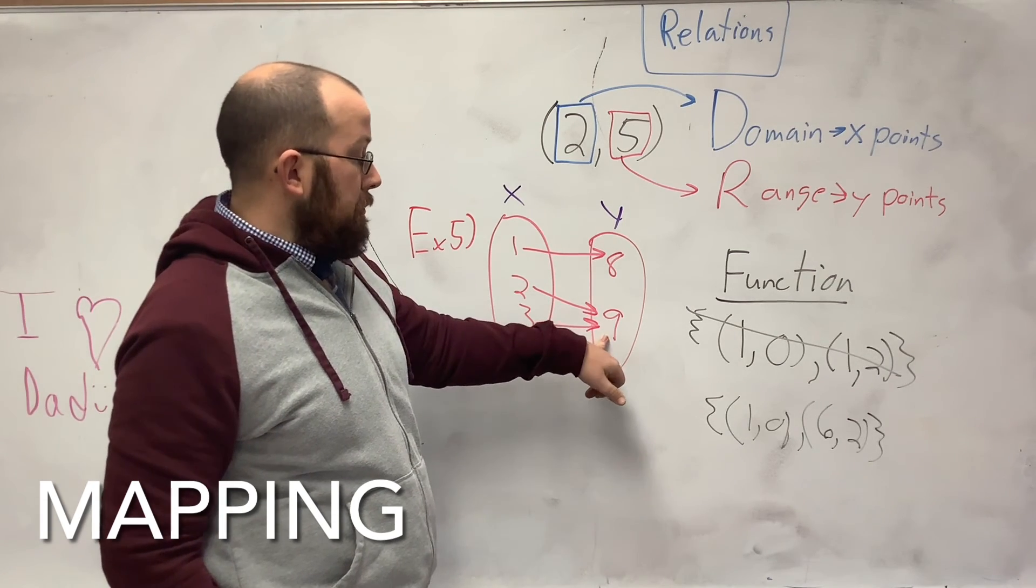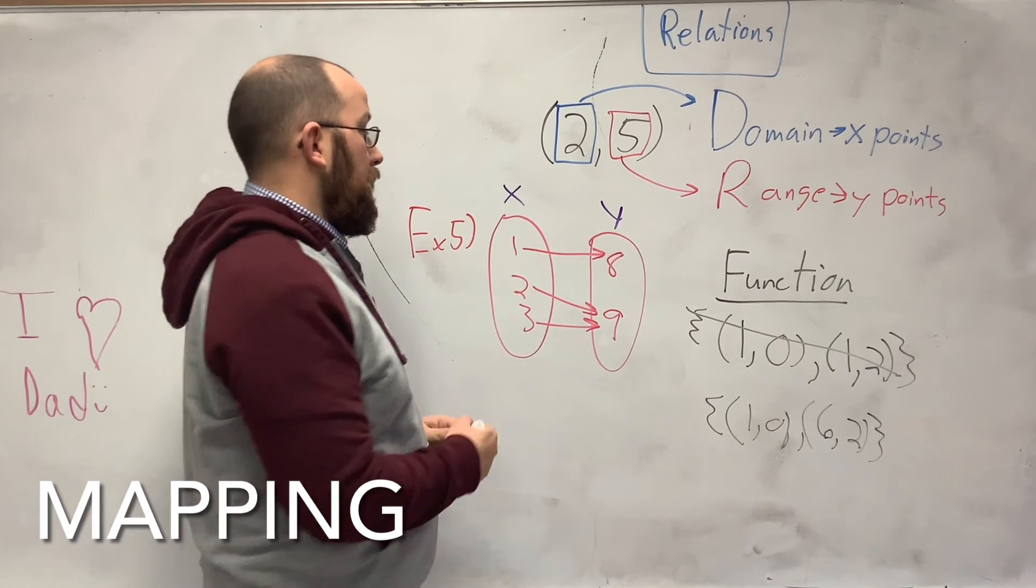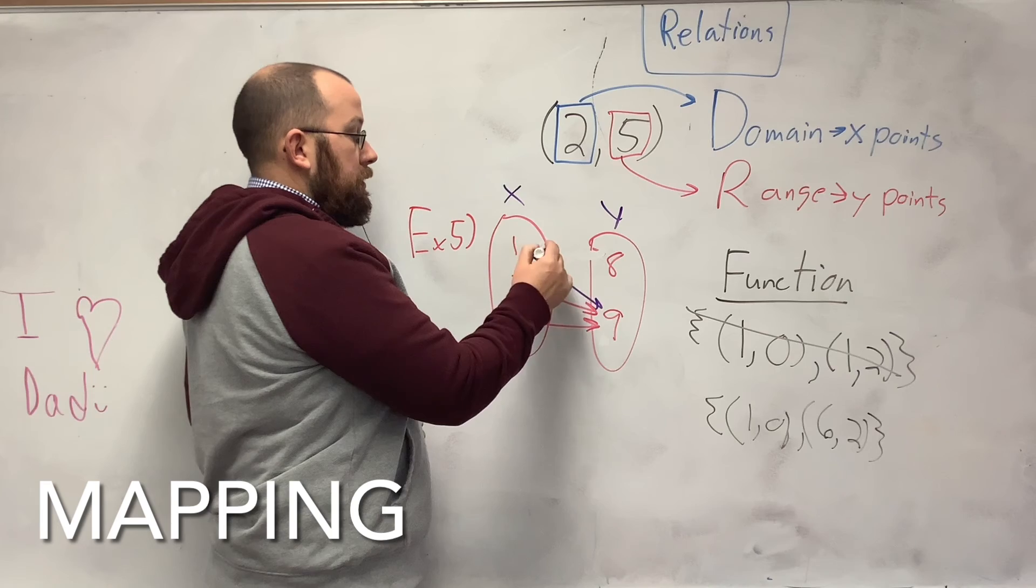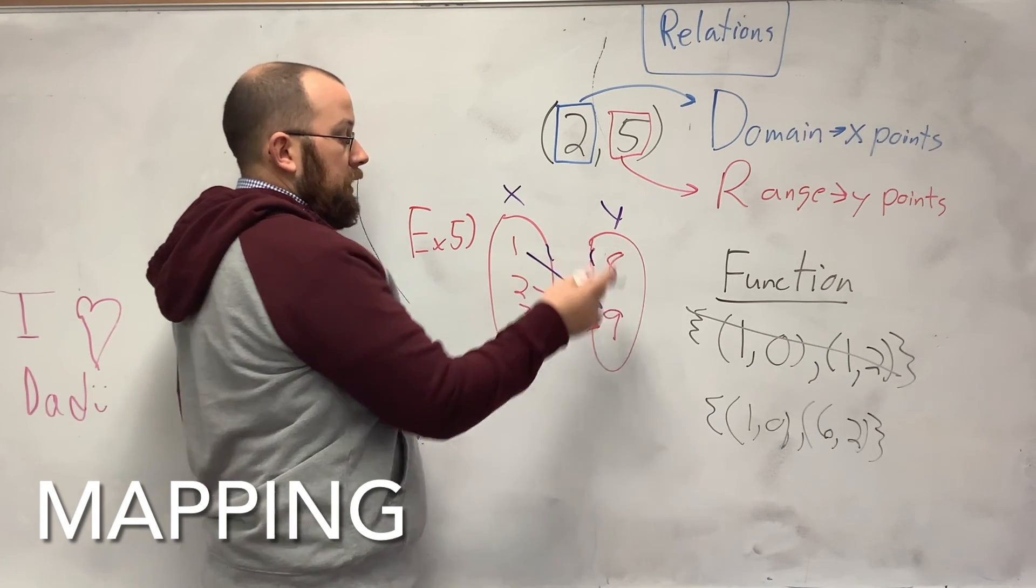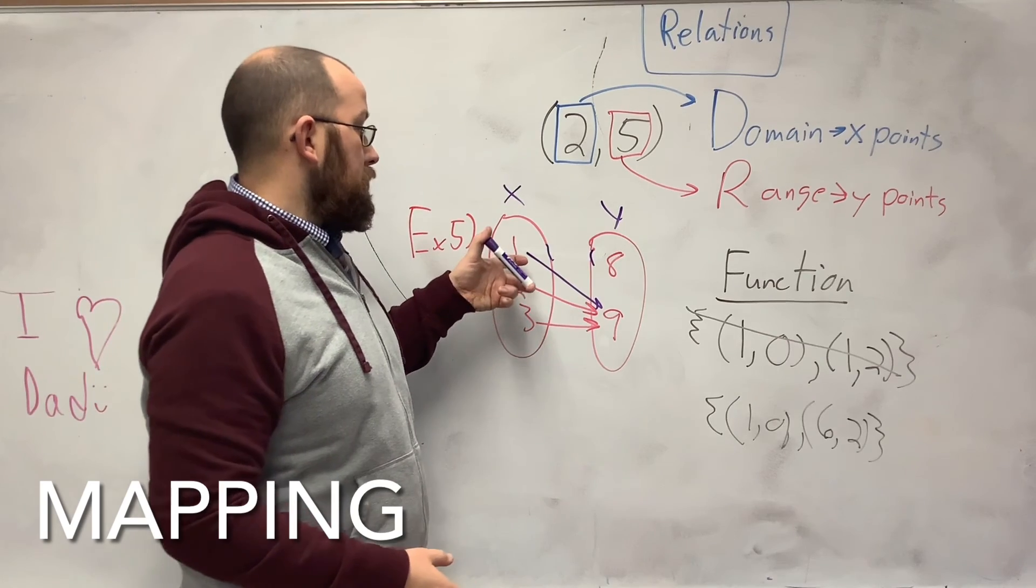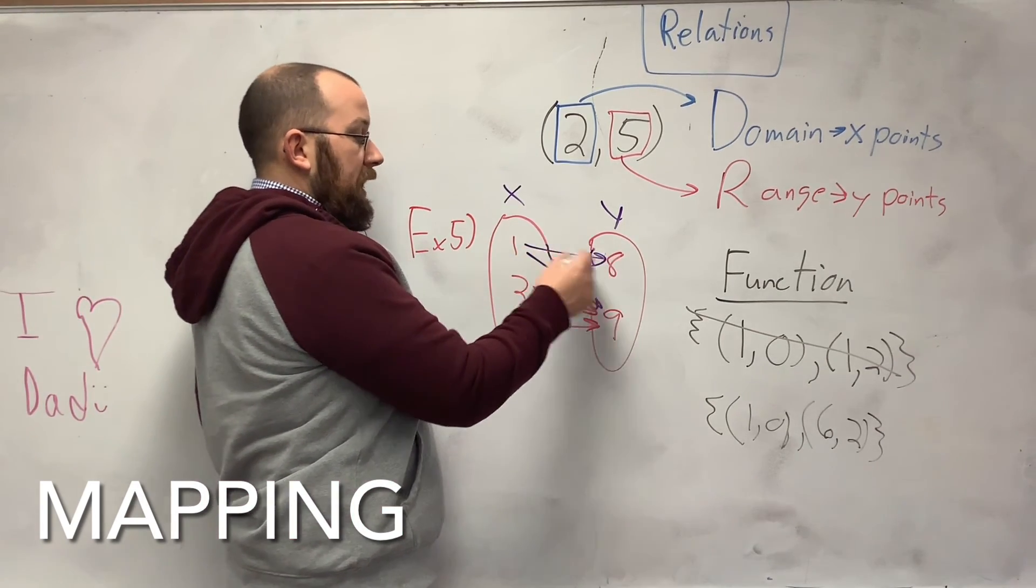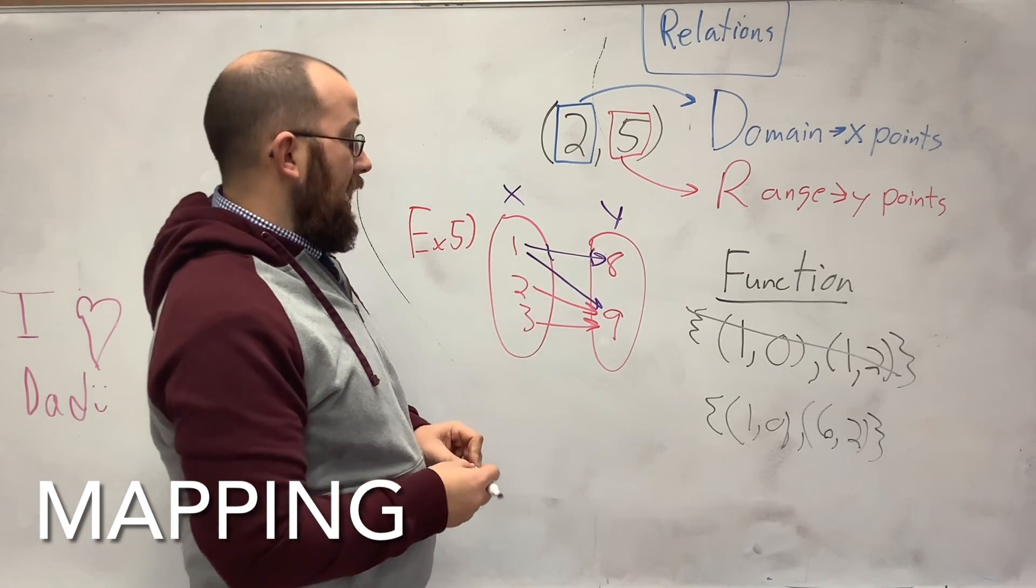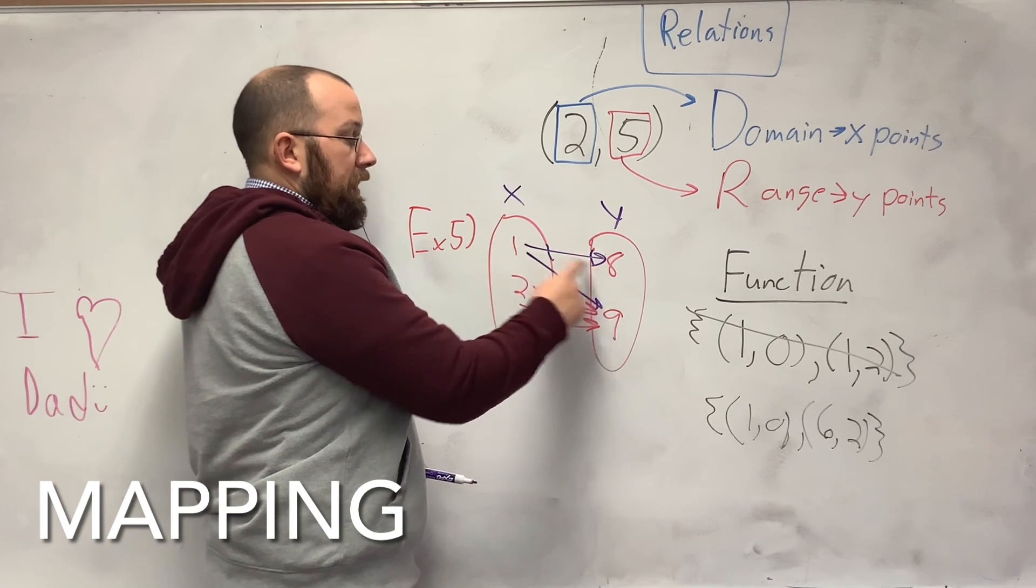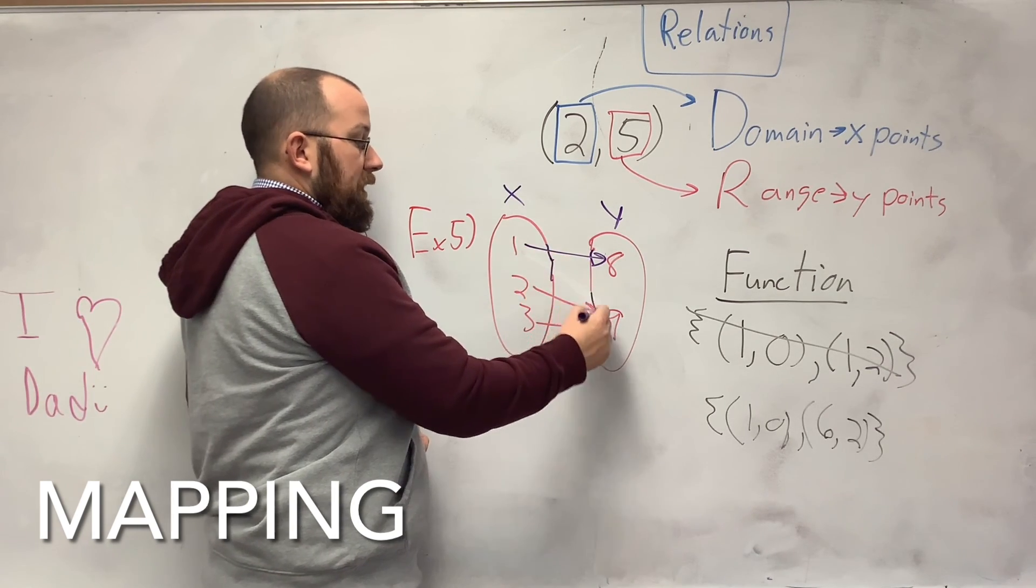Now, they can both have the same number over here. Like all these could be, if I switched it and I said now the 1 is going to the 9, that's fine. It's still a function. They can all have the same output. You just can't have a 1 go to the 8 and then a 1 go to the 9. Now, this is not a function. This is not a function because you have 1 to 8 and 1 to 9, two different things.